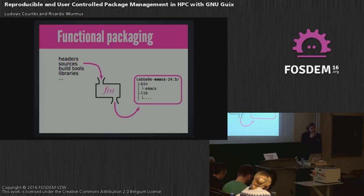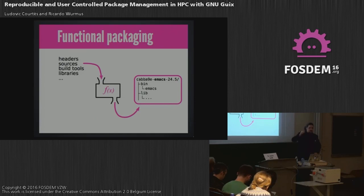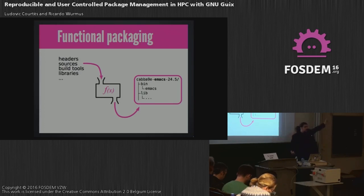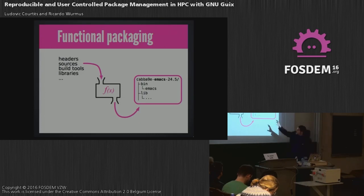There are lots of approaches to get closer to the holy grail of reproducibility. One thing the GNU Geeks project proposes is that functional packaging might be a reasonable way to do that. 'Functional' doesn't mean usable — it means like a pure function. We treat the build process as if it were a function that takes inputs and always produces the same output. If you change the inputs, no matter how much, the output changes.